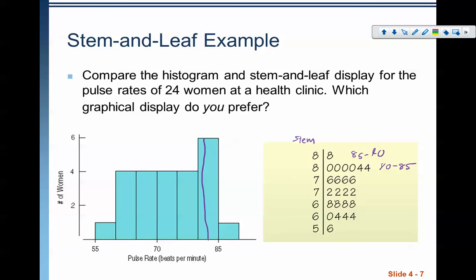We took our data and we used the other digit to create these other values. So this is 56, 60, 64, 64, 64. The numbers are preserved while giving the same shape of the histogram. So that's a stem and leaf plot.